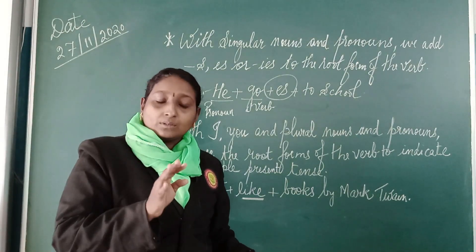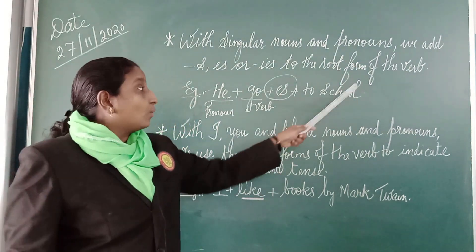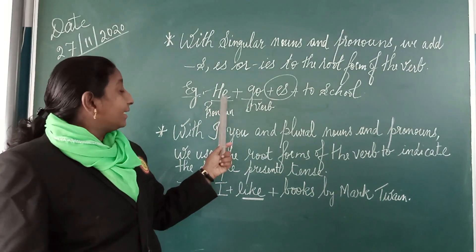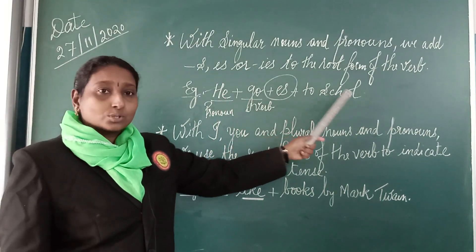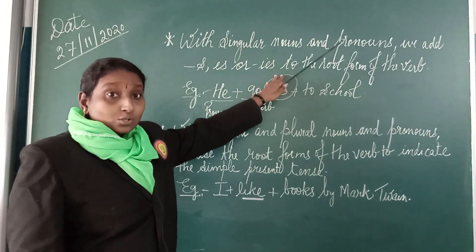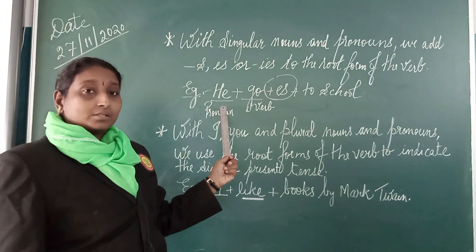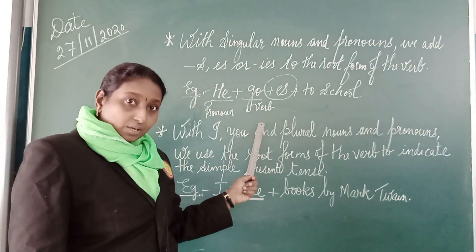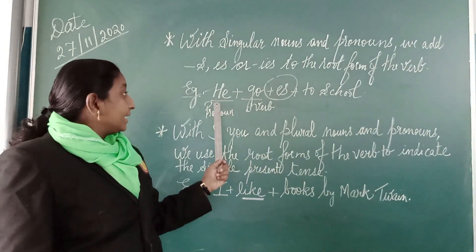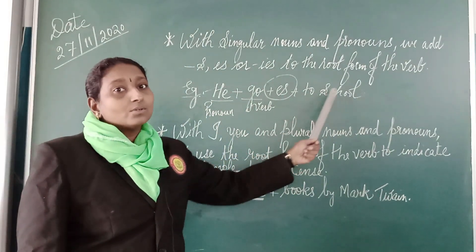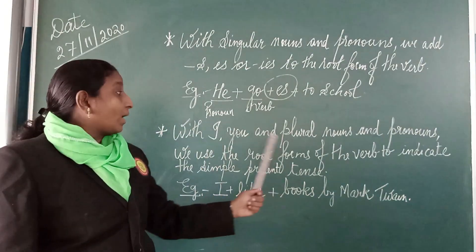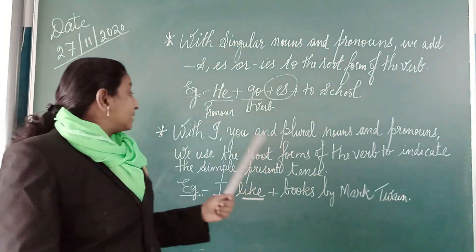Whenever the verb is there and it is a singular noun or a pronoun, with the verb we use S, E-S, or I-E-S. The example is: he goes to school. Here, 'he' is a pronoun and 'go' is a verb. Since there is a pronoun or singular noun, we use E-S or I-E-S or S with the verb. So the sentence will be: he goes to school.